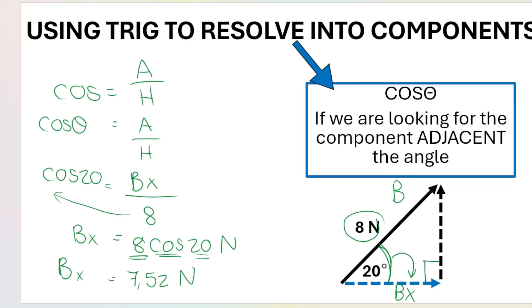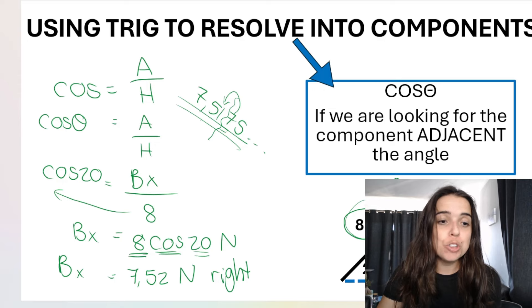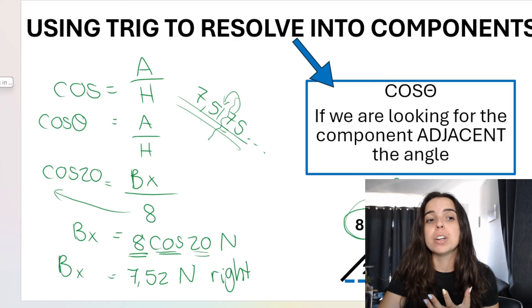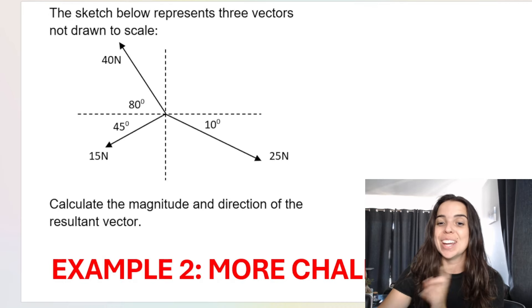Working that out: b_x = 8 cos 20 ≈ 7.52 Newtons. My calculator shows 7.5175..., rounded to two decimal places gives 7.52. In physics, round to at least two decimal places. The answer is not complete without direction: since b_x points to the right, the answer is 7.52 Newtons to the right. This is how we resolve vectors into components, which you'll need for more complex vector questions that I'll cover in a later video.